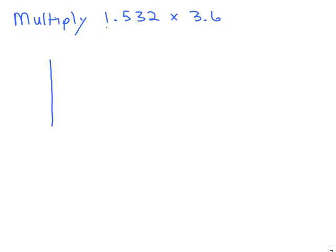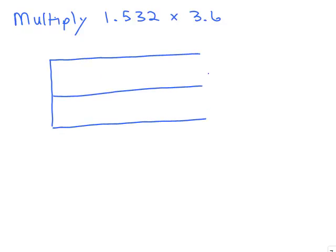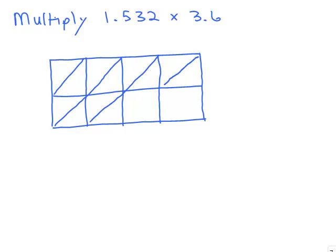So first we've got 4 digits by 2 digits. I'm going to do the 4 across the top but remember you can do it the other way, just put the box sideways so you have 2 numbers across the top. Usually it's easier to put the bigger number across the top. There's less numbers to add up in the diagonals. So we've got 1.532, 3.6. Let's see where the decimals meet.